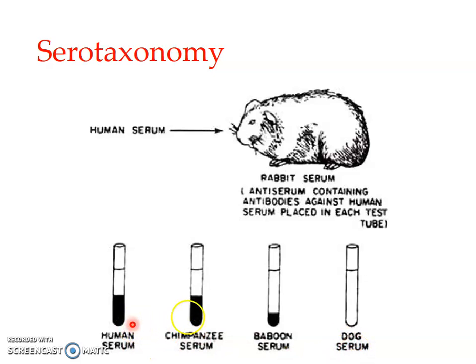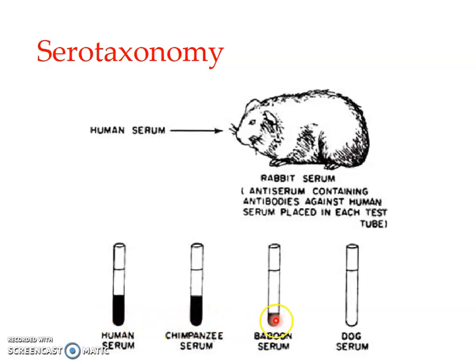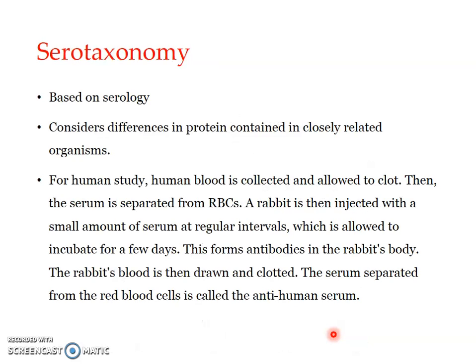So with this, we can conclude that humans and chimpanzees are closely related with respect to evolution and classification. Humans and baboons are distantly related, and such a close relation does not exist at all with the dog. This is what is referred to as serotaxonomy.